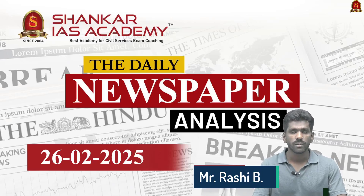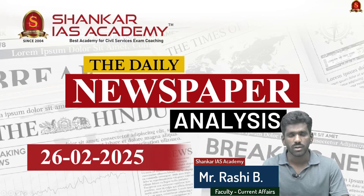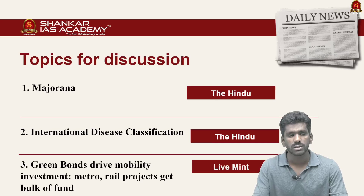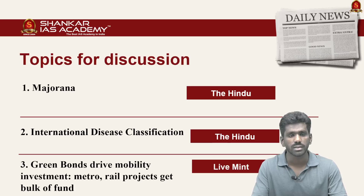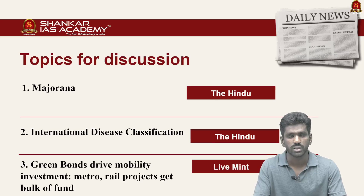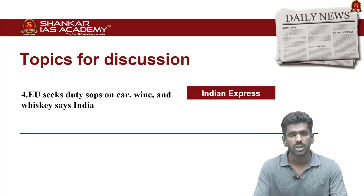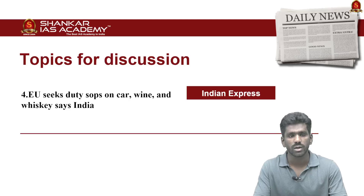Good evening, welcome to daily newspaper analysis brought by Shankaraya's Academy. Today's date is 26th February 2025. The topics we are going to see today: the first article is Majorana, a quantum particle recently discovered by Microsoft. The second is about international disease classification, where Indian traditional systems like Ayurveda, Siddha, and Unani are classified under WHO's ICD. The third is about green bonds and their challenges. The last article is about the economic relationship between India and the European Union.